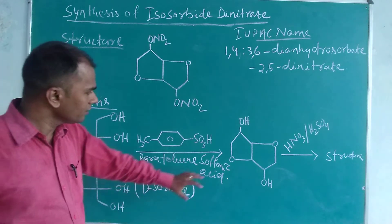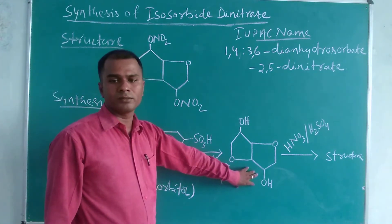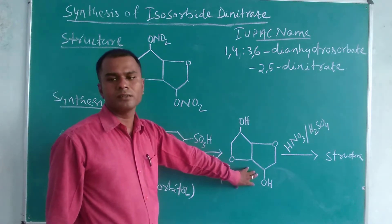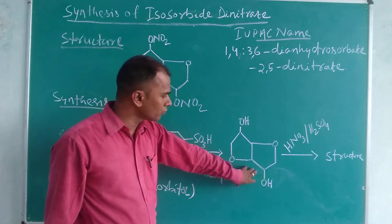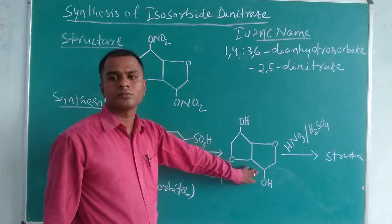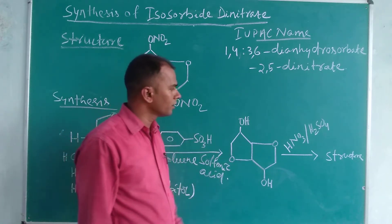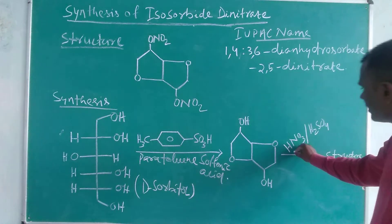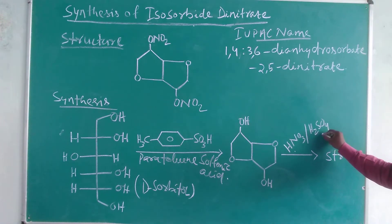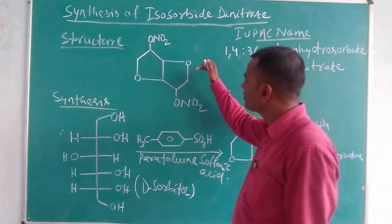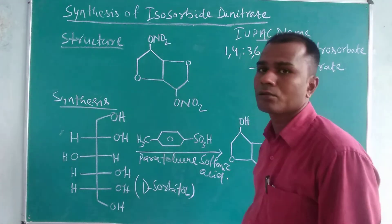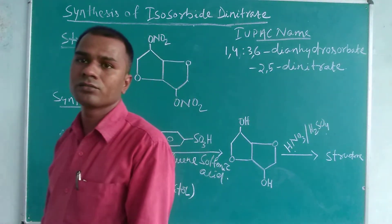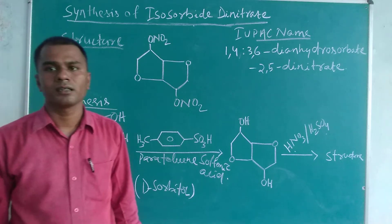And this intermediate isosorbide product, when reacted with nitric acid in the presence of sulfuric acid, gives the dinitro group, that is isosorbide dinitrate.